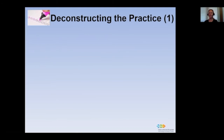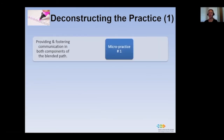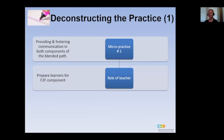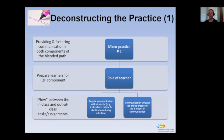Let's deconstruct the practice. I have divided this first high-leverage practice into three micro practices, all of which revolve around the goal of building a continuous seamless blended path in which students progress and you can monitor to make sure they are not falling behind — which is the preoccupation we have in the online component. The first micro practice is providing and fostering communication in both components of the blended path. In a blended path where the two components are planned sequentially, the layering of tasks and delivery modes needs to achieve two important goals. First, you as instructor shouldn't feel as if you are teaching two separate courses. Secondly, your students need to feel that all components work in harmony.